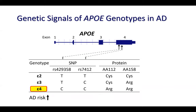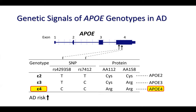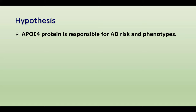These two SNPs are located on exon 4 of the APOE gene. Both SNPs change amino acids, making three different versions of the proteins — APOE2, APOE3, and E4. When E4 emerged as a strong signal in AD in the early 1990s, the main research community thought that the protein was the main functional entity. People jumped to APOE4 protein, thinking it must be causing AD. This hypothesis — that APOE4 protein is responsible for AD risk and phenotypes — shaped the following 30 years of mainstream APOE research.